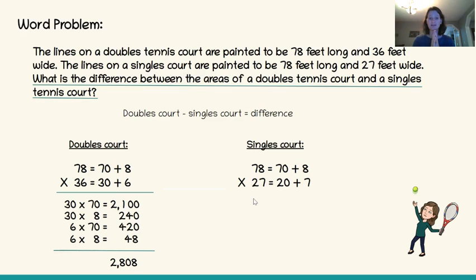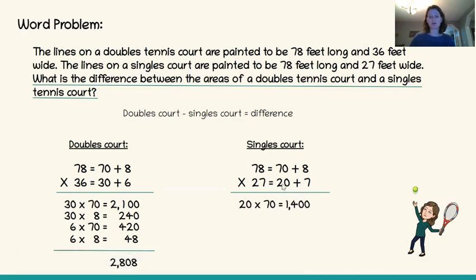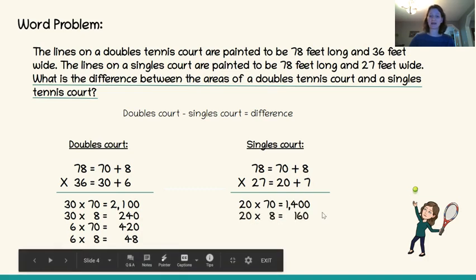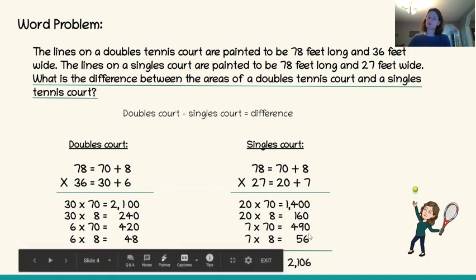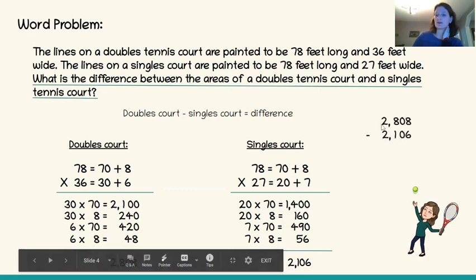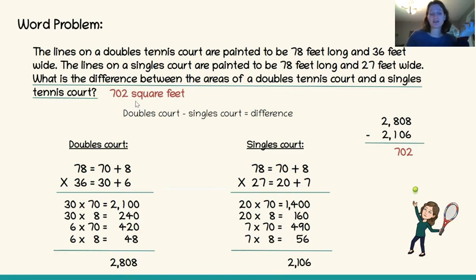Using expanded notation again for 78 times 27, I do 20 times 70, 20 times 8, 7 times 70, and 7 times 8, then add together the partial products to solve. The singles court is 2,106 square feet. So I've got these two pieces of information, but I still need to find the difference between the areas. I take the doubles court and subtract the singles court, and I solve for 702 square feet. The difference between the areas of a doubles tennis court and a singles tennis court is 702 square feet.